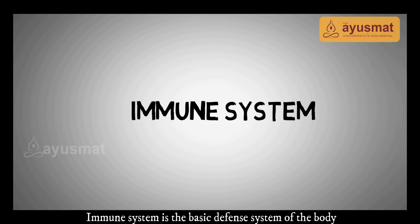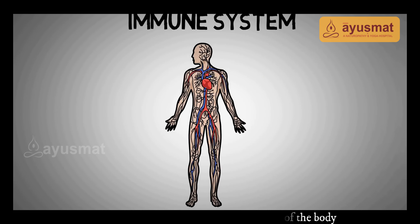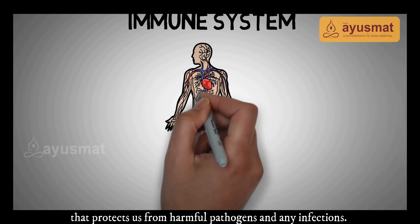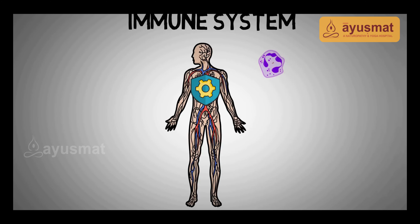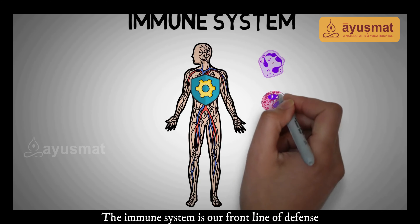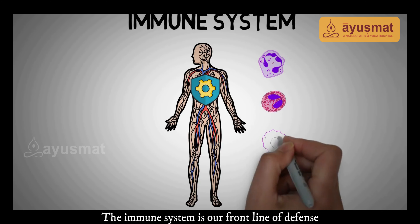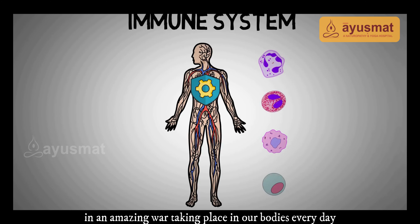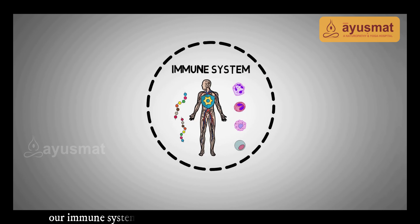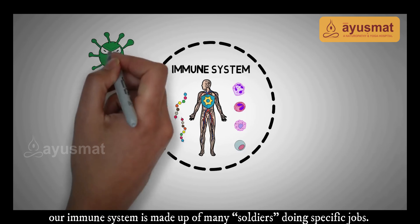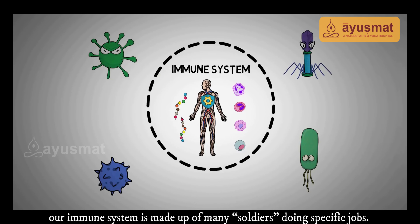The immune system is the basic defense system of the body that protects us from harmful pathogens and any infections. It is a friendly line of defense in an amazing war taking place in our bodies every day. Like a modern army, our immune system is made up of many soldiers doing specific jobs.